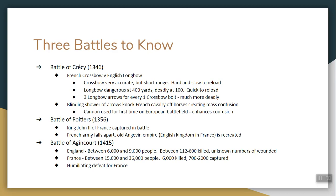In 1356 there's the Battle of Poitiers. At the Battle of Poitiers, King John II — the king of France — is actually captured in battle. You know a battle has gone badly when your king is captured. The king becomes a prisoner held for ransom. The French army falls apart, and the English kingdom in France, called the Angevin Empire, is almost totally recreated. But that's just going to be a temporary success.